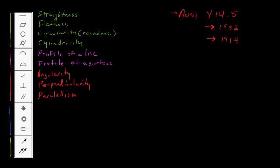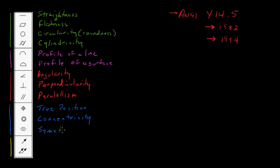The next group also contains three symbols. The first is called true position, the next is concentricity, and the last is symmetry. The final group has two symbols: circular runout and total runout.